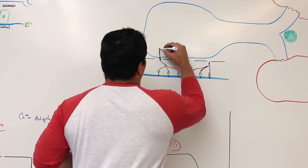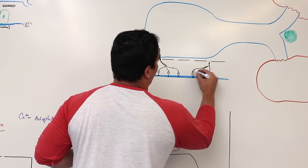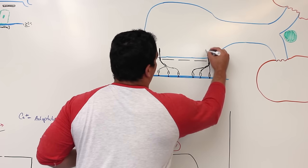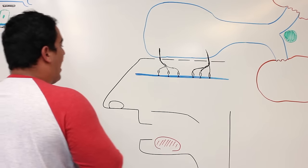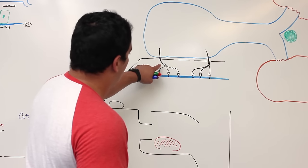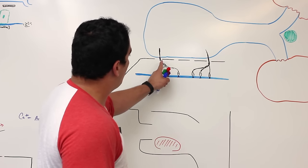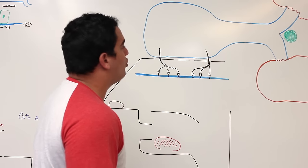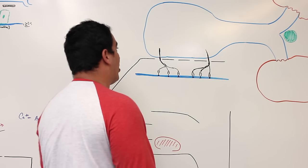These neurons move upward through the cribriform plate of the ethmoid bone. As these axons of the olfactory nerves move up through the cribriform plate, they enter into what's called the olfactory bulb.